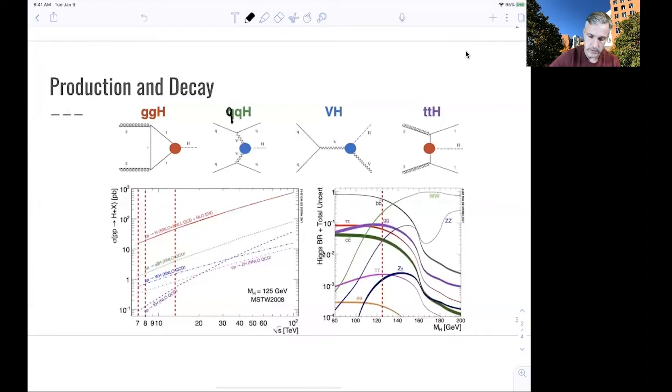The second one is called vector boson fusion, or VBF, where quarks radiate two vector bosons—either Z bosons or W bosons. These couple to the Higgs field and produce the Higgs boson.